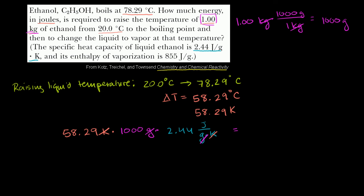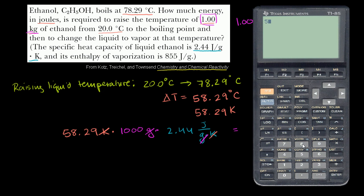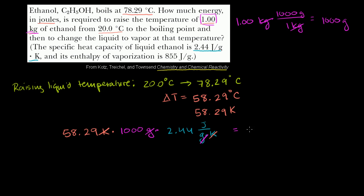And we are left with, take out the calculator. So we have 58.29 times 1,000 times 2.44 is equal to, and we only have three significant digits here.